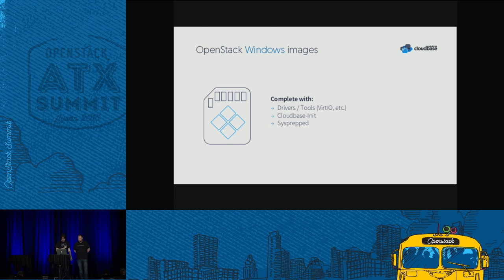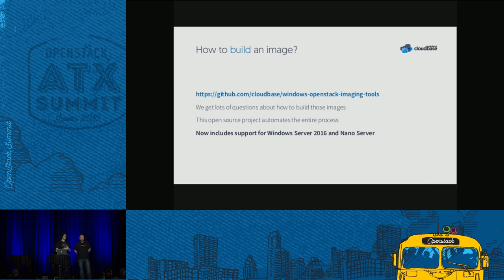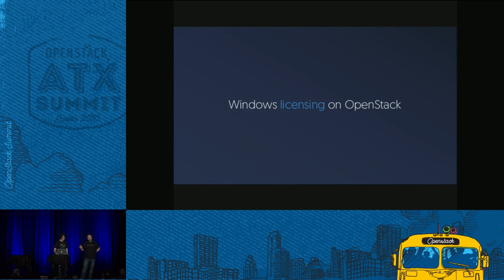For Windows images, we have scripts that will automatically deploy Windows images for you, including all the drivers, tools, Cloud-base Init needs, sysprepped and everything. We believe in open source, so all of our scripts are available on GitHub. We also have Windows Server 2016 and Nano Server support. Those are our de facto mechanisms for creating cloud images of Windows.